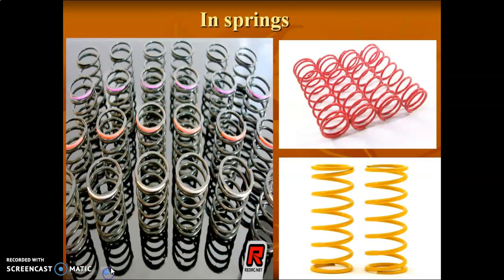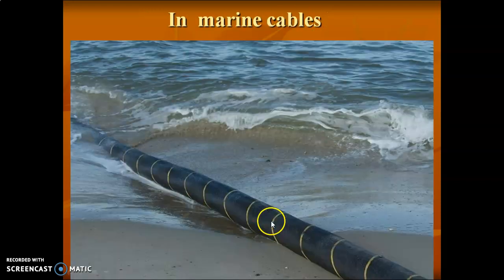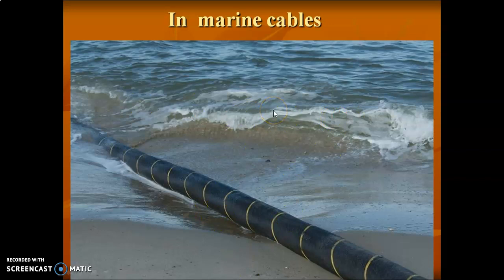Springs used in the automobile industry are made of metallic glasses. In computer memories, the RAM chips use metallic glasses. For marine cables, the internet cables connecting the world — used by Google, Yahoo, and others — are made of metallic glasses so that data is not lost during transfer. Thank you.